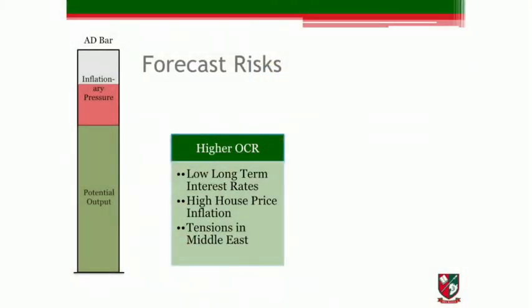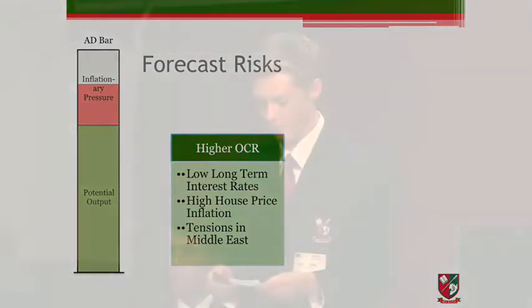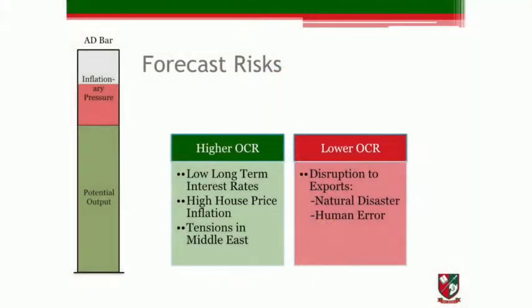We advise gradual OCR rises as opposed to a sudden rise for two reasons. Firstly, monetary policy takes about 12 months to have its main effect — a gradual rise therefore allows us to monitor the economy and make changes as we gather more information. Secondly, a large OCR rise could cause an unplanned-for shock to the economy, damaging potential output. The OCR may need to be raised to a higher rate if long-term interest rates don't increase high enough due to low overseas rates, if house price inflation remains high despite the LVR rules, or if the price of oil significantly rises due to tensions in the Middle East. The OCR may need to be raised to a lower rate than 5% if there is a disruption to exports like a drought, shock to China's economy, higher-than-expected fall in commodity prices, or a diplomatic/human error like the botulism scare. We advise businesses to plan wisely as it is more likely that the OCR will need to be raised above 5% than to a point below 5%.